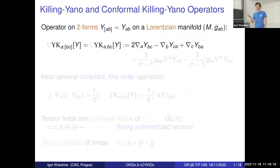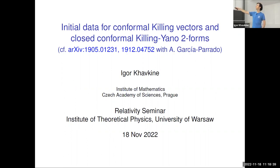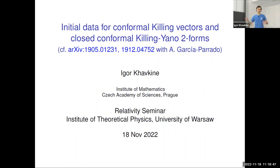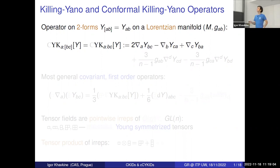Let me just remind you — there are multiple aspects of what I'm going to talk about. Maybe the least familiar thing to people might be what are Killing Yano forms, and then maybe the second least familiar thing would be what it means to have initial data for some geometric tensor on your spacetime. So I'll try to explain that. First, a reminder about Killing Yano and conformal Killing Yano tensors.